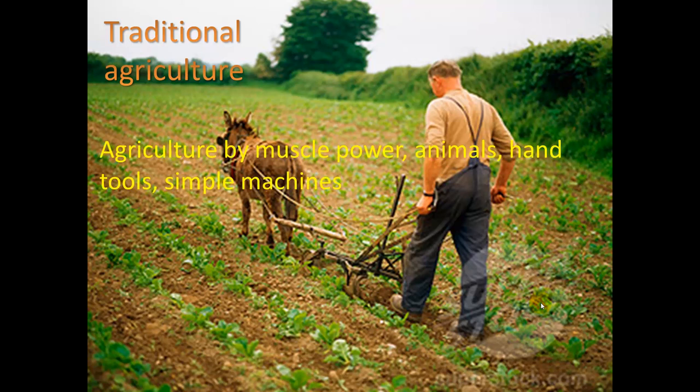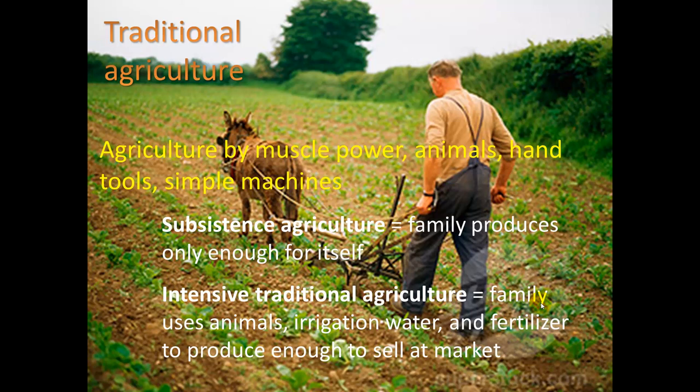In traditional agriculture, we have agriculture by muscle power — animals, hand tools, and simple machines. There are two terms: subsistence agriculture, meaning a family produces only enough for itself to subsist; and intensive traditional agriculture, where a family uses animals, irrigation water, and fertilizer to produce enough to sell at market. What would be non-traditional is the use of machinery and fossil fuels.